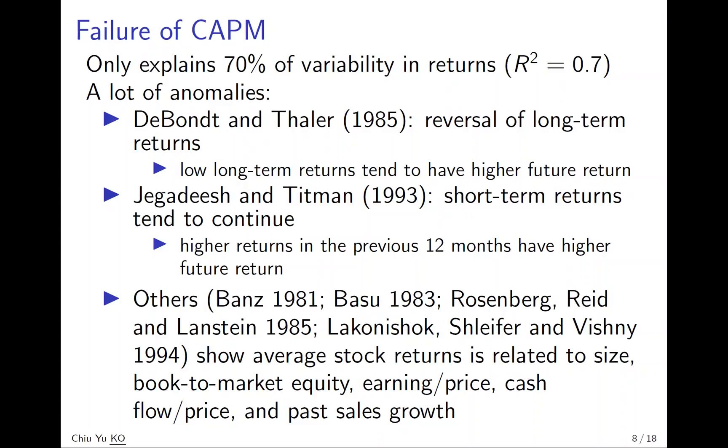We have a lot of anomalies that we cannot explain in the CAPM. The first is in 1985, people discovered long-term reversals. What does that mean? It means that if the stock has been doing badly in the past, it tends to do well in the next year. Conversely, if it has been doing pretty good in the past, it will do badly next round.